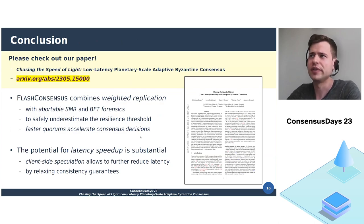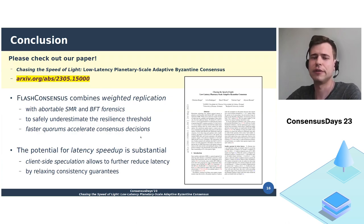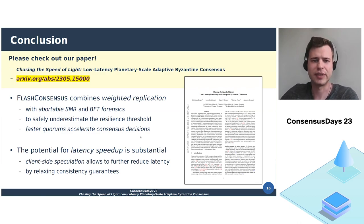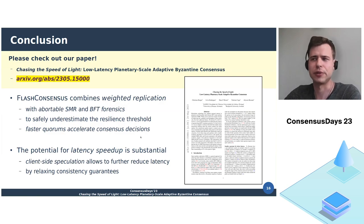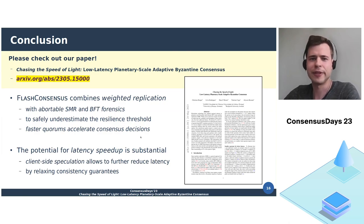To conclude, Flash Consensus is a novel transformation for quorum-based BFT protocols which combines weighted replication with abortable SMR and BFT protocol forensics. It can safely underestimate the resilience threshold and thus use faster quorums to accelerate consensus decisions. Our evaluations showed that the potential for latency speedup is quite substantial. The use of client-side speculation allows reducing latency even further by relaxing consistency guarantees, which can be very beneficial for applications in which some operations might not be security critical. Please check out our paper, which we recently published as a preprint on arXiv. Thank you very much for your attention, and if you have any questions, feel free to ask.